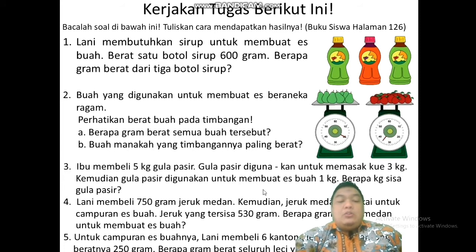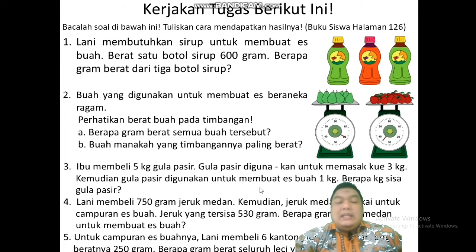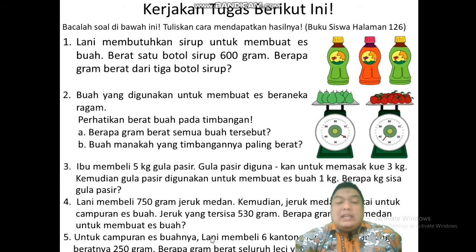Nomor 5: untuk campuran es buahnya, Lani membeli 6 kantong leci. Setiap kantong beratnya 250 gram. Berapa gram berat seluruh leci yang dibeli Lani? Ini berarti bentuknya perkalian, sama seperti soal nomor 1. Perkaliannya ditulis berapa kali berapa — jangan sampai terbalik, karena artinya berbeda.